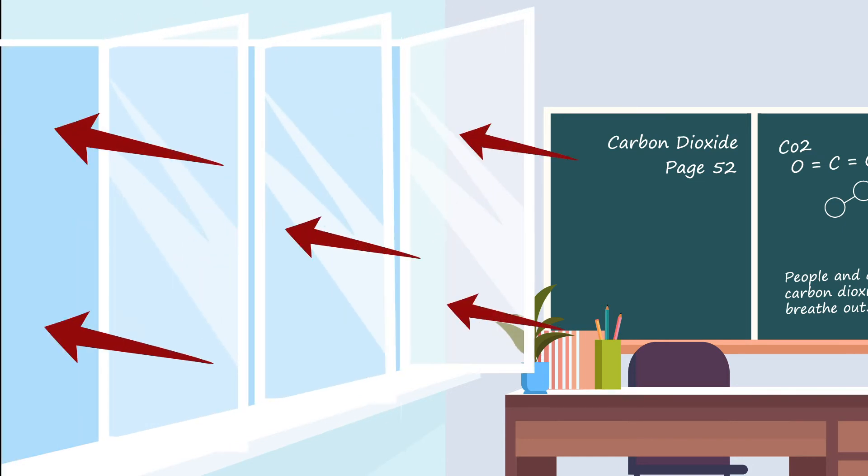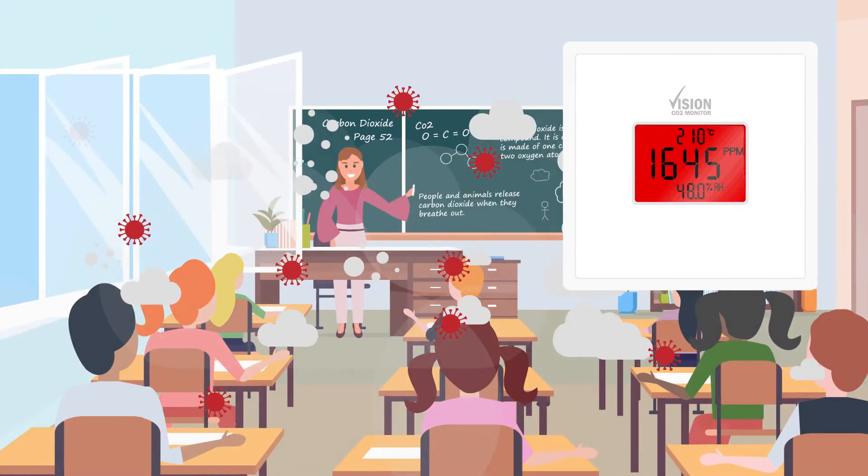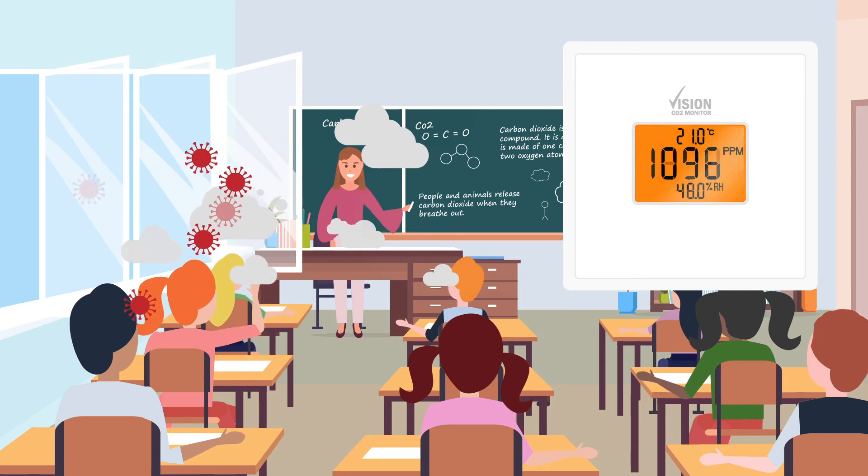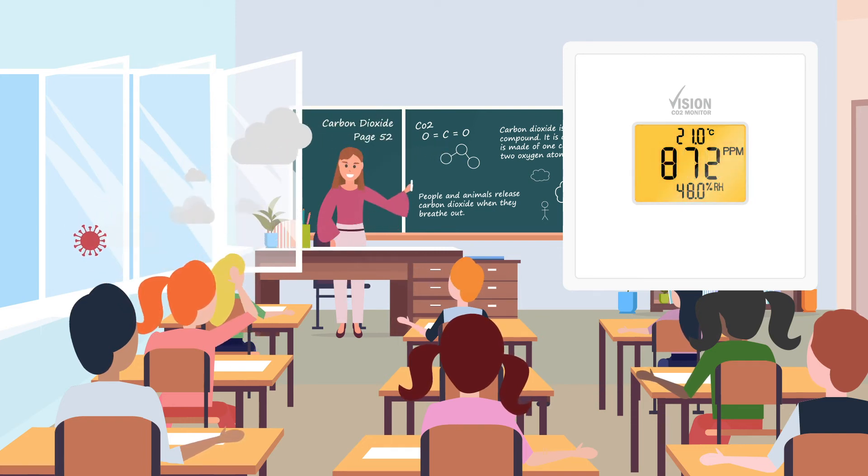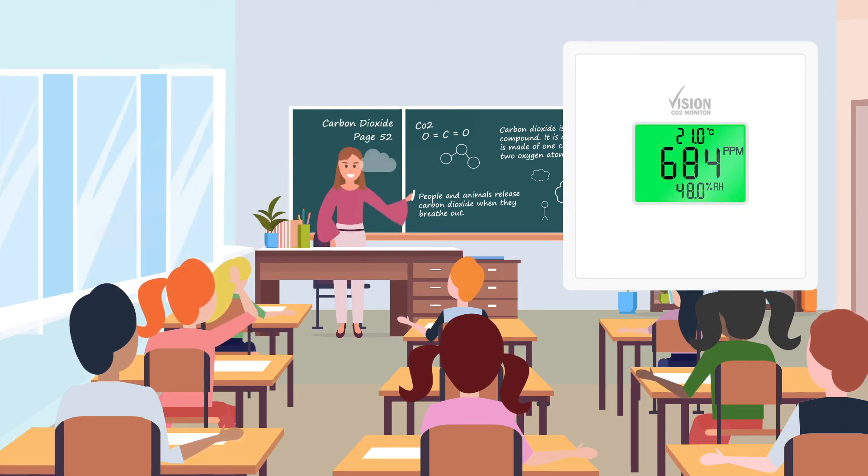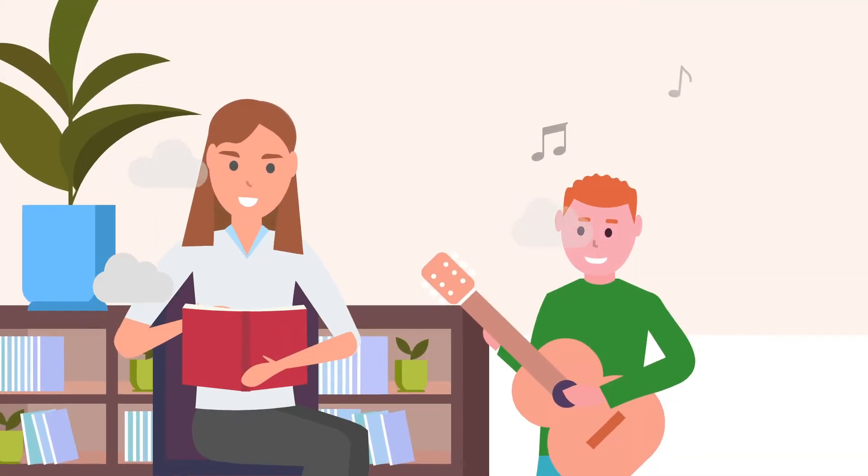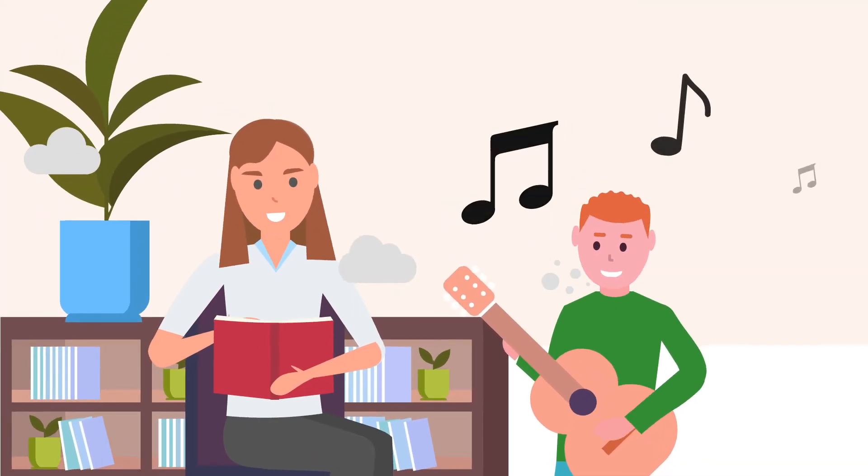If high CO2 levels are present, it is recommended that the room is purged by increasing ventilation as much as possible until the levels are reduced. The ventilation can then be decreased, providing a low CO2 level can be maintained.